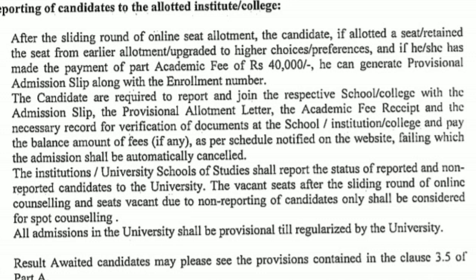Now the very important part: reporting of candidates to allotted institutes or colleges. After the sliding round, if a seat is allotted or retained from an earlier allotment or upgradation and payment of ₹40,000 has been made, you can generate your provisional admission slip along with an enrollment number. Take a printout of the provisional admission slip and report to your respective school or college with it. The institutes will then report the status of reported and non-reported candidates to the university, and the final list will be prepared.